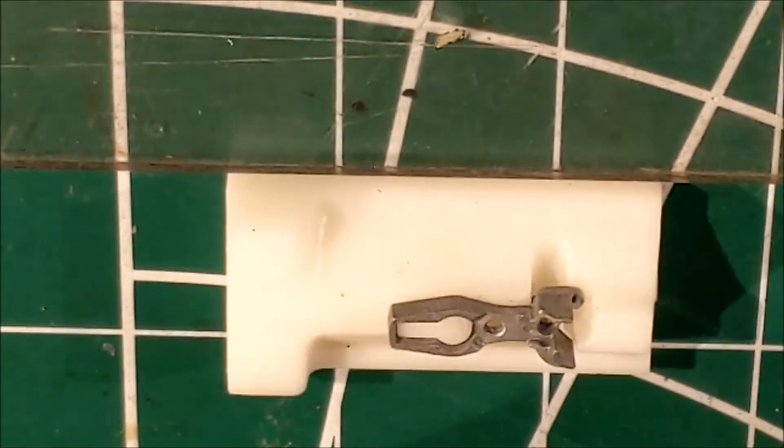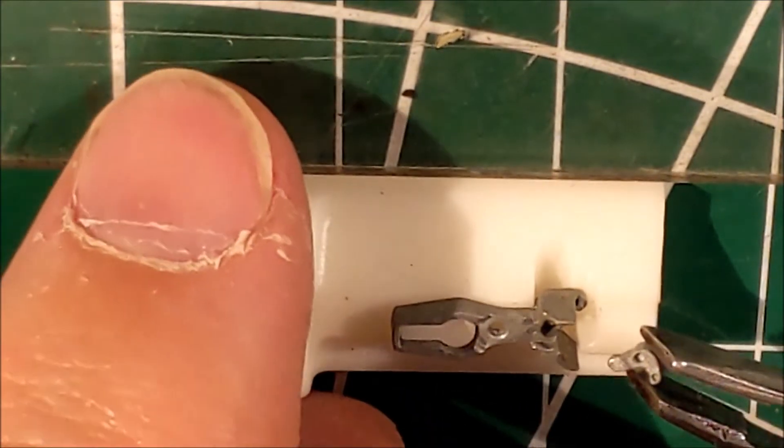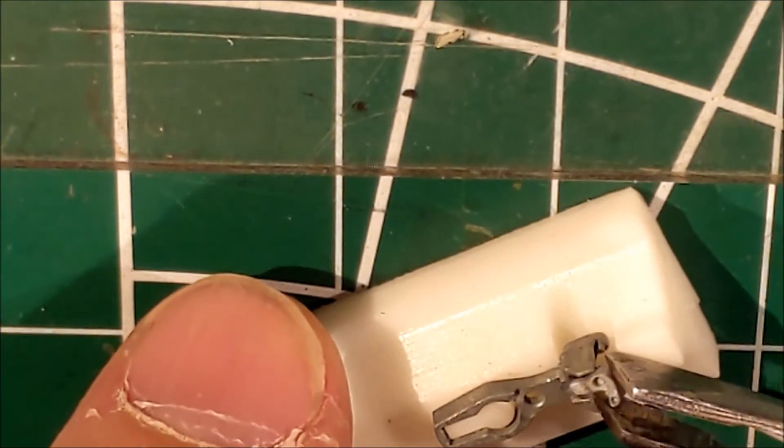Okay, ball bearing's in the hole. We're going to put the knuckle on next. Knuckle sits over a little tiny peg right on the tip of the coupler.